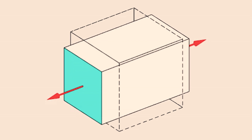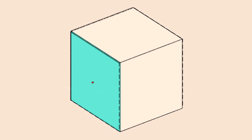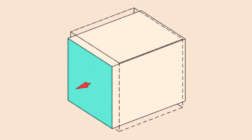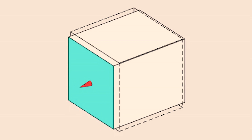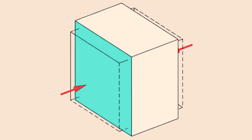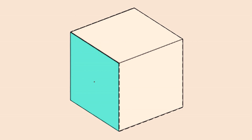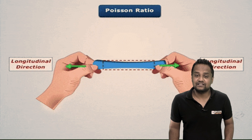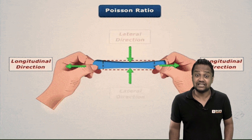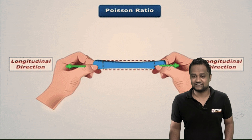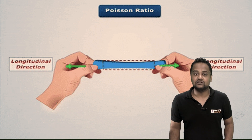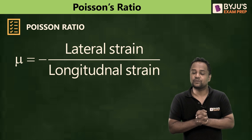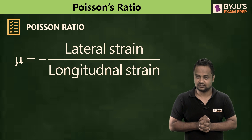Longitudinal strain means the strain in the direction of force or stress. Any strain which is 90 degrees or in the transverse direction to that force is called lateral strain. So in the direction of force it is longitudinal strain, and in the perpendicular transverse direction the strain caused is the lateral one. Poisson's ratio is the ratio of lateral strain to longitudinal strain.